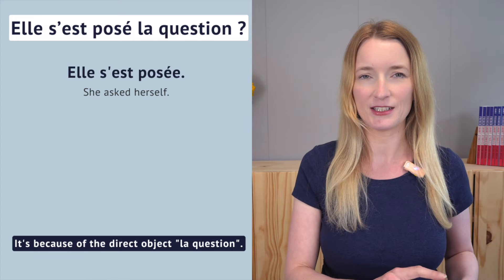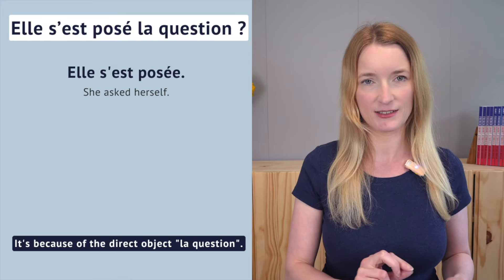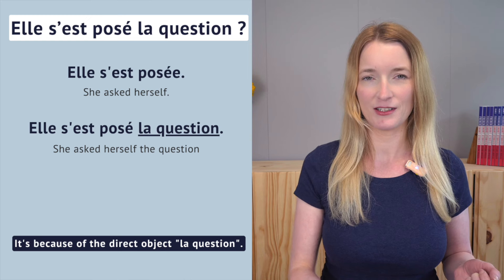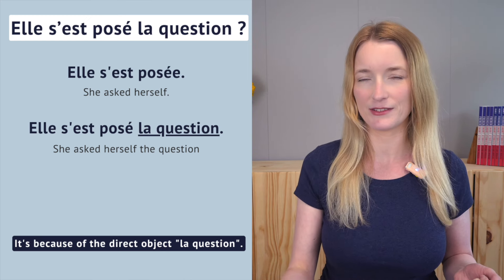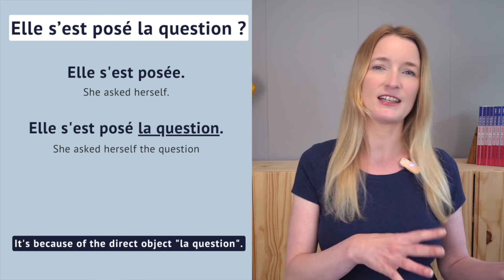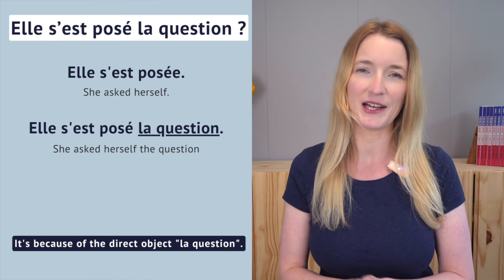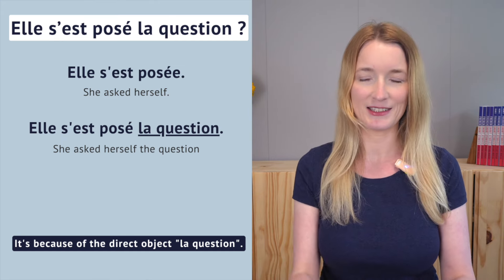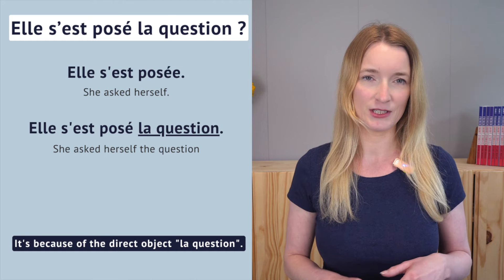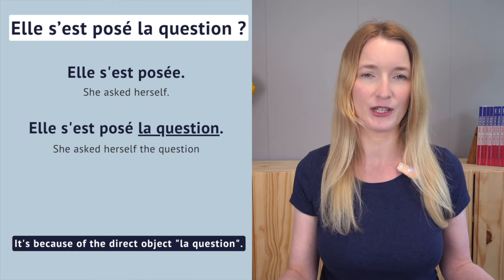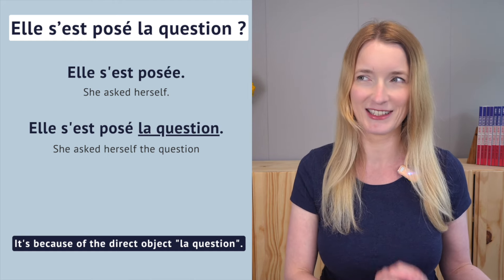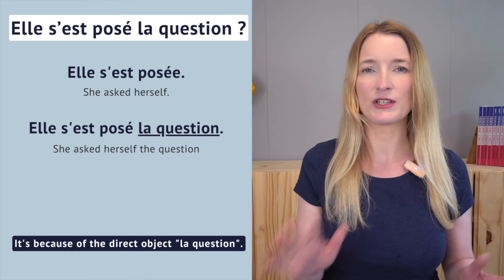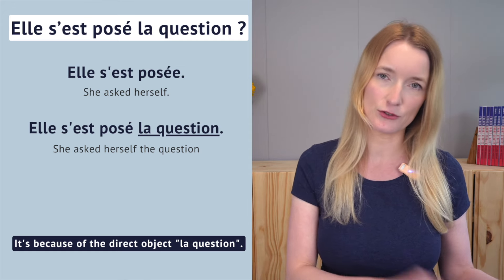'Elle s'est posée' — here we would have the E at the end. But if we add 'la question' after — 'elle s'est posé la question' — the direct object is after the verb, so the past participle doesn't agree with it. 'Elle s'est posé la question' — 'elle s'est posé quoi?' — 'la question'. 'La question' is the direct object, and because it comes after the verb, the past participle does not agree.